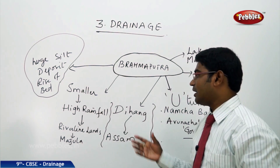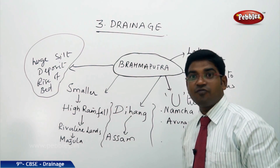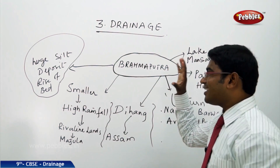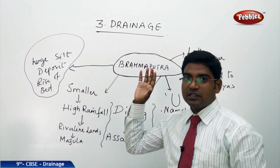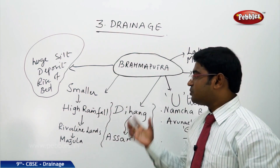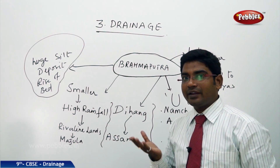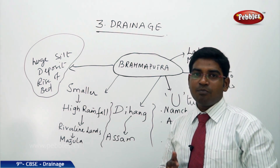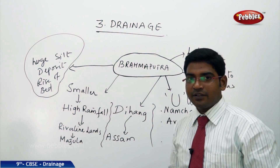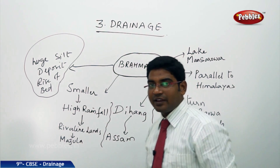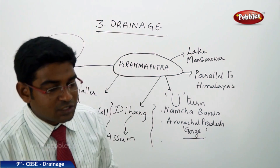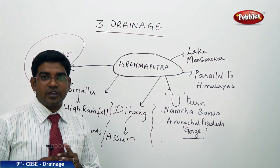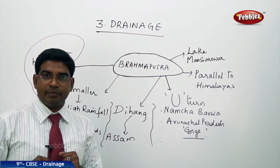Brahmaputra creates very large and fertile riverine lands. It also carries huge amounts of silt, soil, and deposits which cause its riverbed to rise, resulting in frequent floods in the Brahmaputra-flowing regions, especially in Assam. Finally, it enters Bangladesh, renaming itself Padma, and ends its journey by joining the Bay of Bengal.